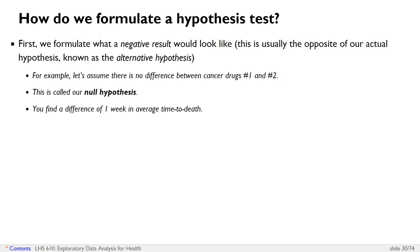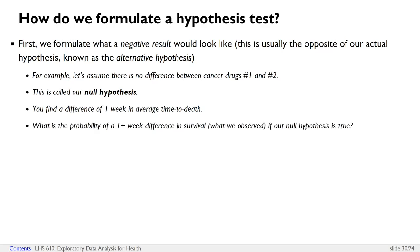And now we find a difference of one week. What we want to know is: what's the probability that a one-week or more difference in survival is possible based on our data — what we observed — if our null hypothesis were to be true?